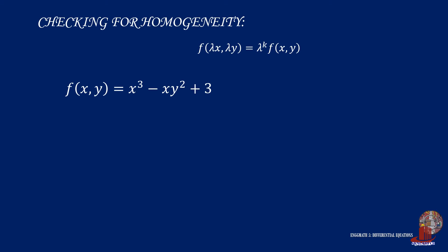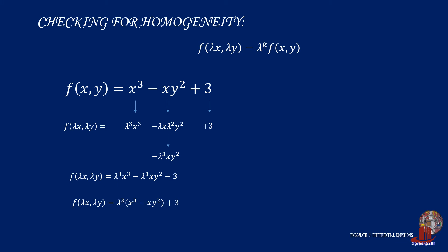Consider the function x³ - xy² + 3. Multiplying lambda gives λ³x³ - λ³xy² + 3. Although we can extract λ³ from the first two terms, the constant 3 prevents the result from matching the standard form f(λx, λy) = λ^k · f(x, y). So this function is non-homogeneous.